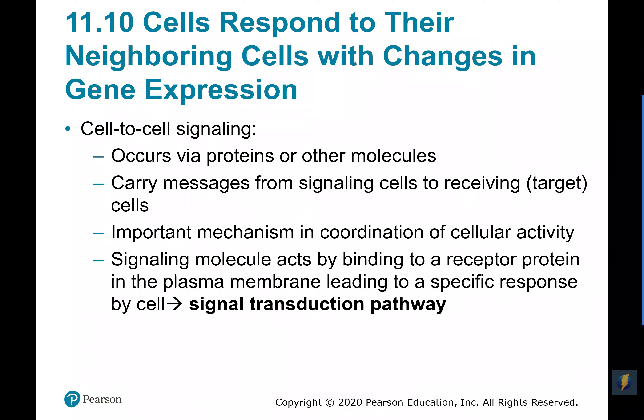Cells don't exist in a vacuum — lots of cells communicate with other cells, particularly during developmental processes. When genes are being expressed in terms of becoming a multicellular organism, this usually occurs via proteins, though sometimes other molecules like carbohydrates and lipids are involved. It's sort of like passing a baton in a relay race — the initial message goes to a target cell and the message is passed inside the cell. This is very important for coordinating cellular activity, and hormones do this all the time.